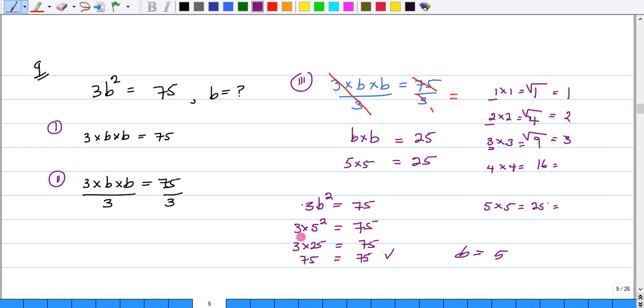Now, let's look at this. 3b squared is equal to 75. And 3 times 5 squared is going to give me 75. 3 times 5 squared is 75. And 75 is equal to 75. So, I know that my answer is correct.